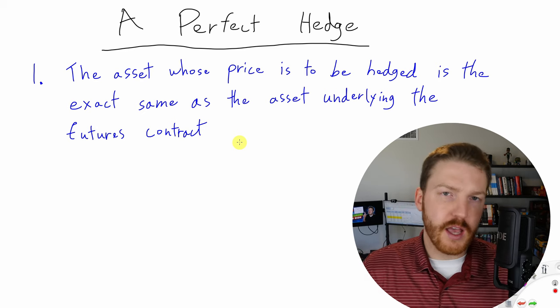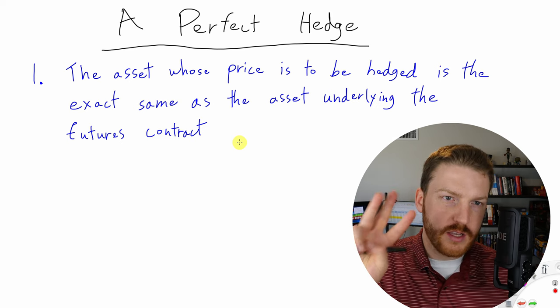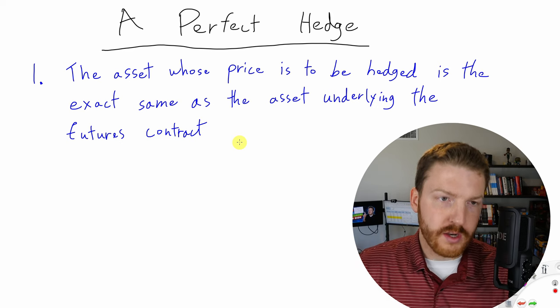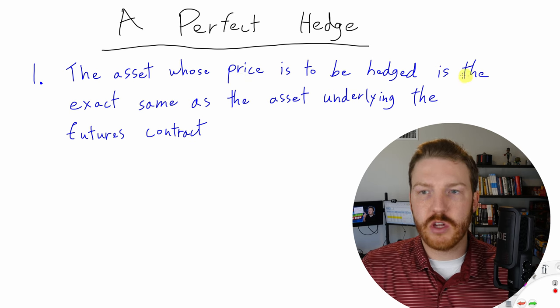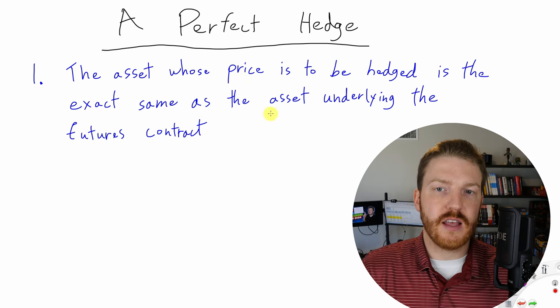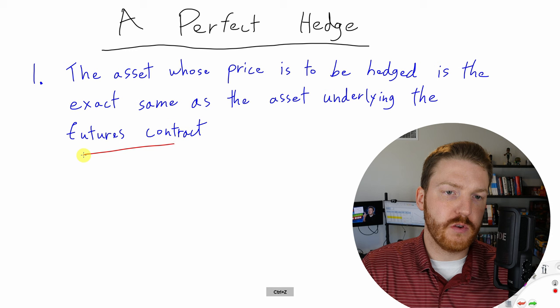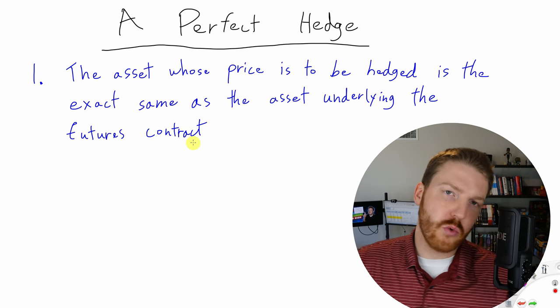Before we can get into basis risk, let's really quickly discuss what is a perfect hedge. A perfect hedge is a hedge that satisfies three conditions. The first one is that the asset whose price is to be hedged is the exact same as the asset underlying the futures contract.